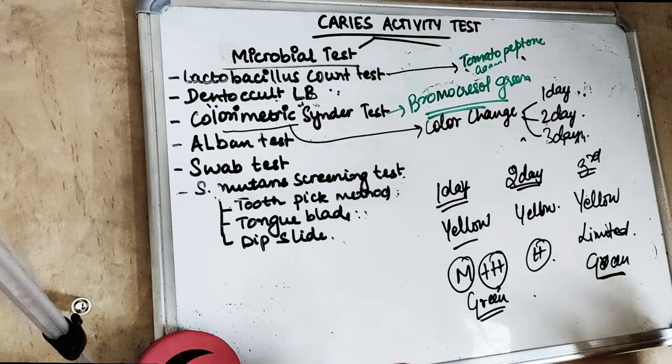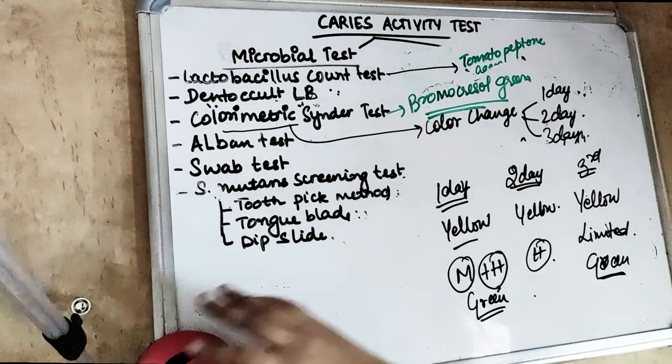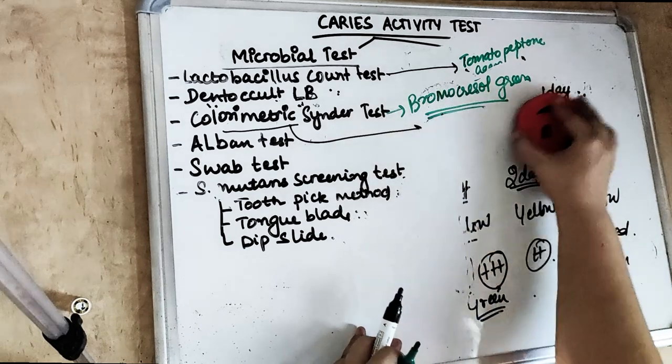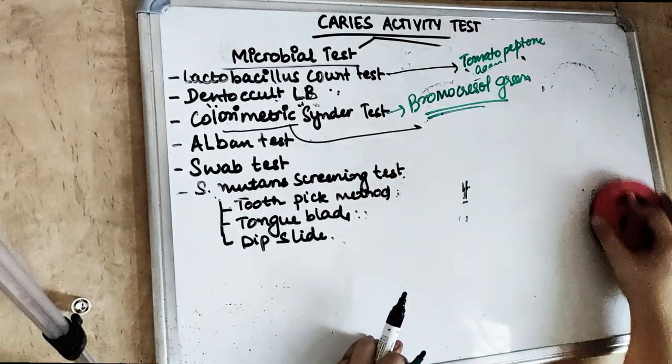Results of the Snyder test: if yellow color appears on day 1, the patient has marked caries activity (+++). If still green on day 1, we continue incubating. If yellow on day 2, caries activity is definite. If yellow on day 3, there is limited activity. If still green after day 3, caries activity is inactive. The Snyder test is simple and inexpensive, but the main drawback is it is time-consuming and color changes are not always very clear.